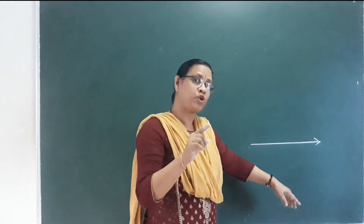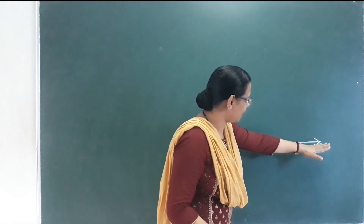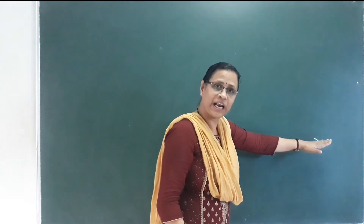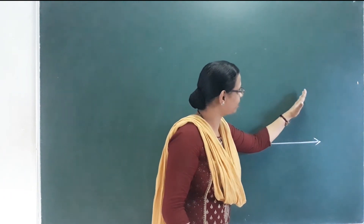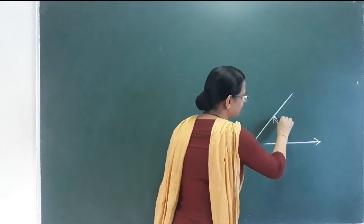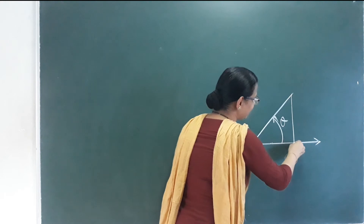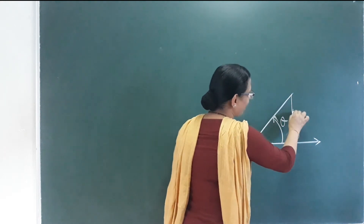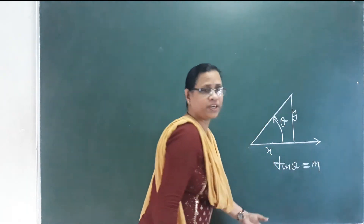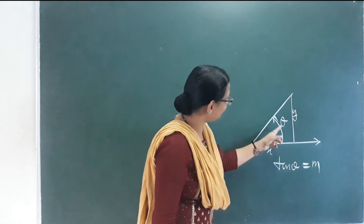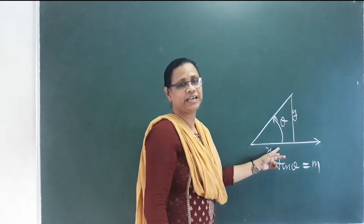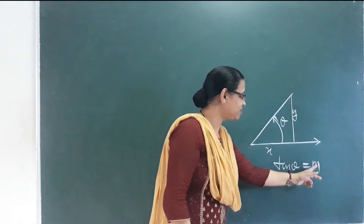This is the slope of a line. The slope is the inclination measured in the anticlockwise direction from the horizontal line, giving angle theta. Then tan theta equals m — this is the slope. The slope is opposite side divided by adjacent side, which is tan theta.